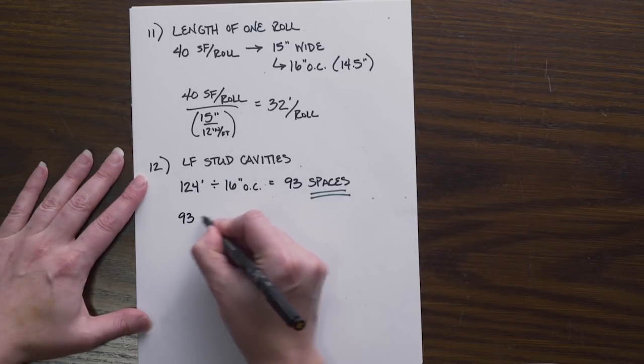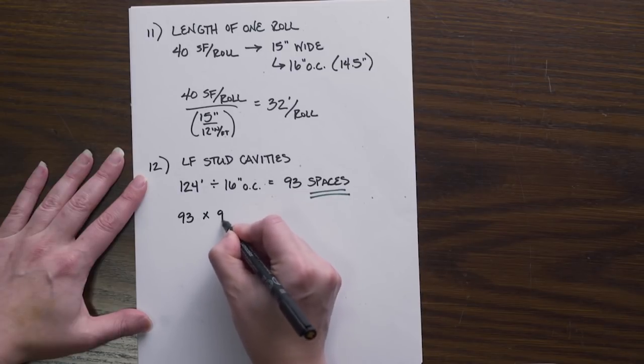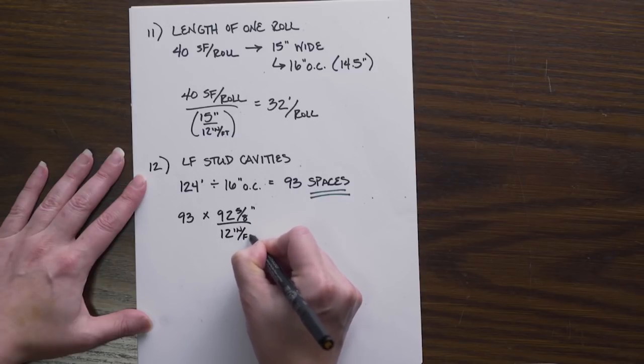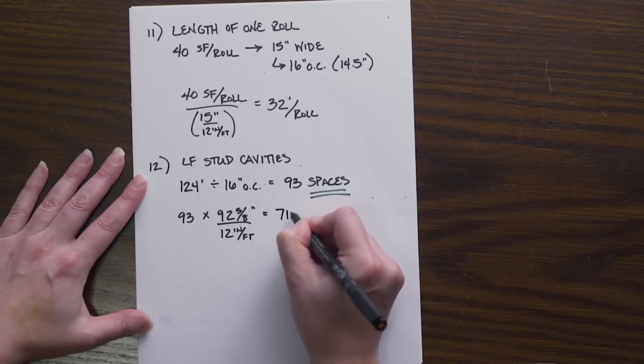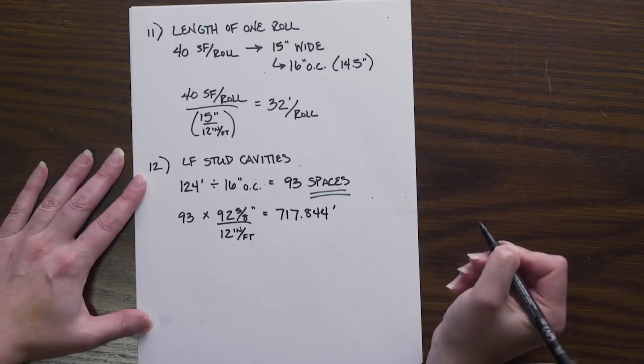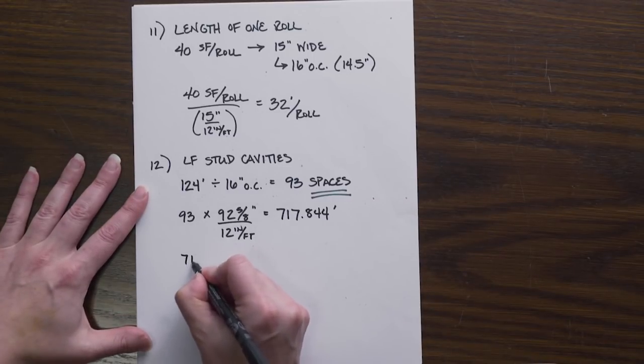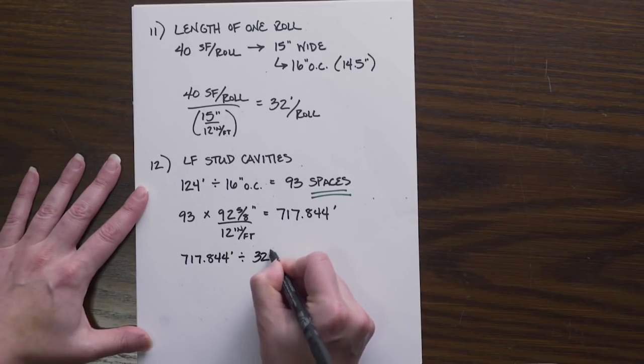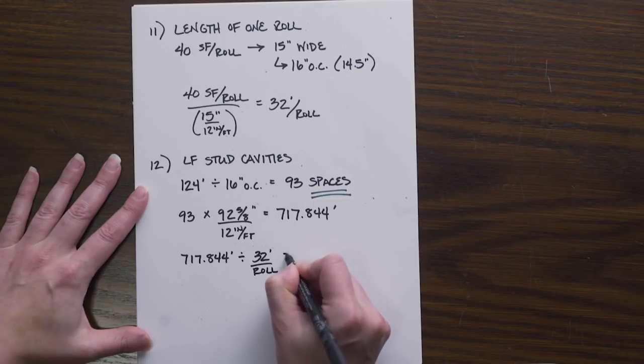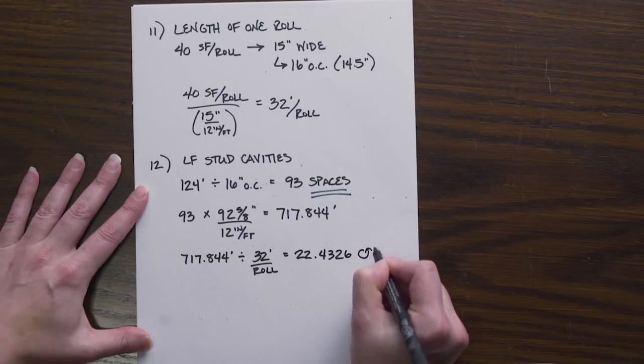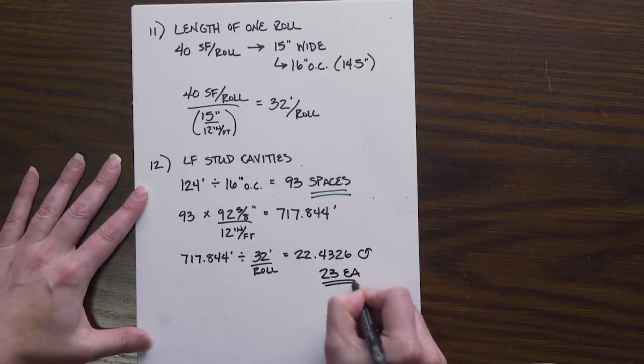And if we know we have 93 spaces that are all 92 5/8 inch in length, convert that into feet, we see that we have 717.844 feet of insulation. And we just determined that each roll is 32 feet. So we can determine 22.4326, round up to 23 rolls if we do not subtract out for the openings.